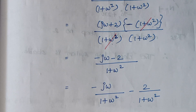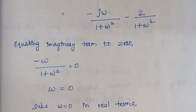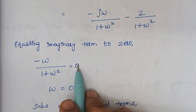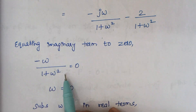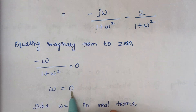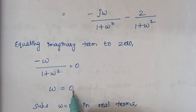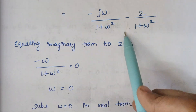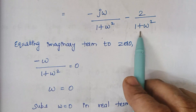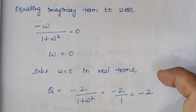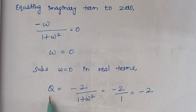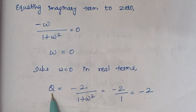The next step is equating the imaginary term to 0. Equating the imaginary part to 0, when we move the denominator over, 0 multiplied by 1 plus ω squared is 0, so the value of ω is 0. Substituting ω equal to 0 in the real term — which is minus 2 by 1 plus ω squared — the value of q is minus 2. Here q is the intersection point of the Nyquist plot on the negative real axis.